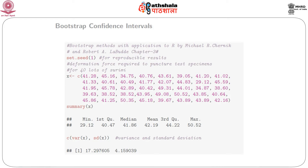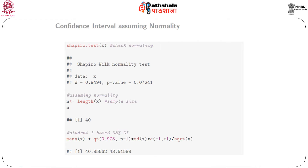We store the data in x, and using summary(x), the minimum value is 29.12, the maximum is 50.52, the variance is 17.297, and the standard deviation is 4.159. To test normality, we use shapiro.test(x). The Shapiro-Wilk normality test gives a p-value of approximately 0.07, which is nearly significant.